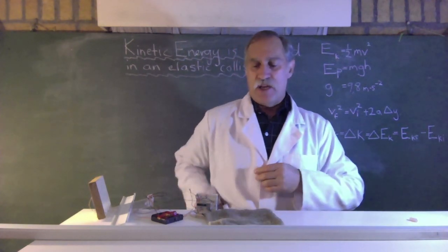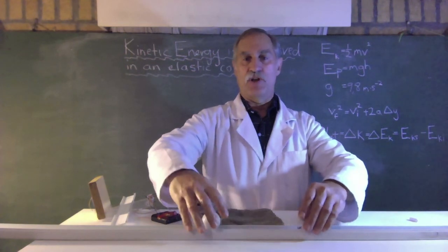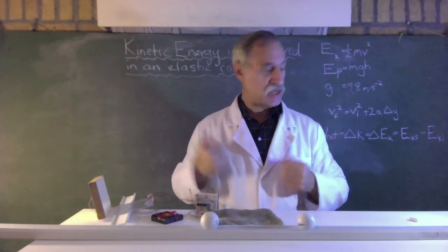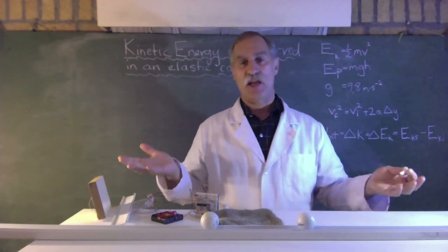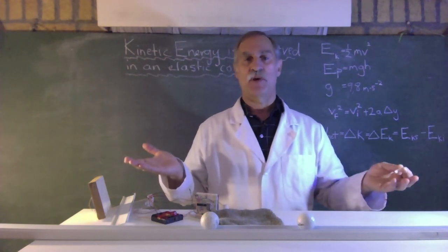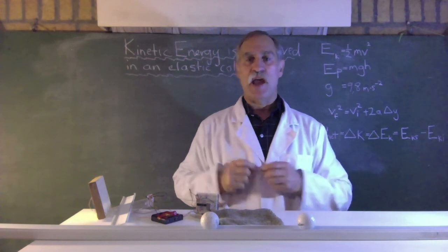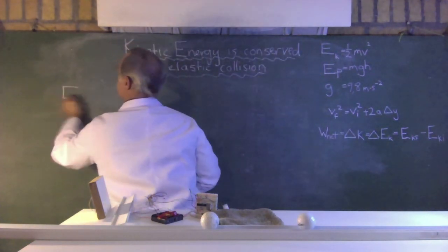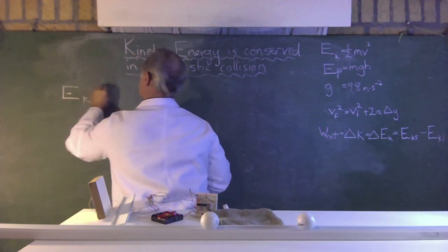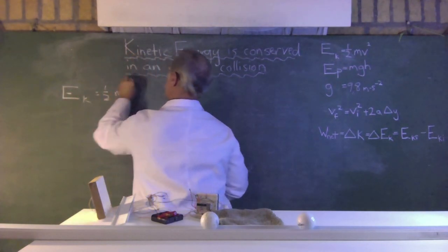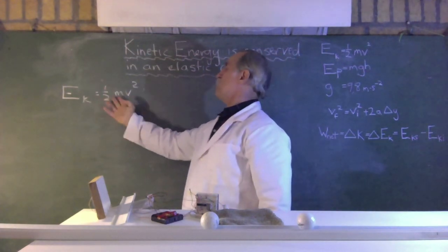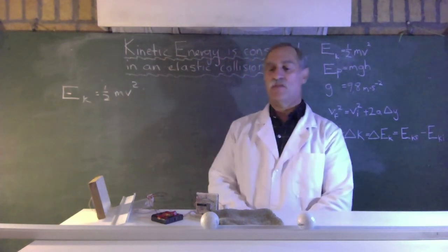Now in every collision momentum is conserved, but in not every collision is kinetic energy conserved. So what is kinetic energy? Well it's the energy that an object possesses by virtue of its movement. And the formula for kinetic energy is Ek equals a half mv squared. So the kinetic energy is half the mass times the velocity squared of the object.